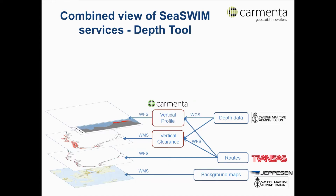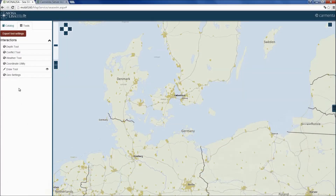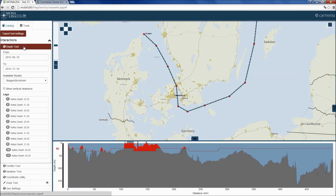To complement this, we add a vertical profile of the same route using another service. The result is a visualization of the shallow areas surrounding the route in a combined plan and profile view. Now let's see how this looks in the application. In the Tools menu, we can enable the Depth tool, which calculates safety depth.